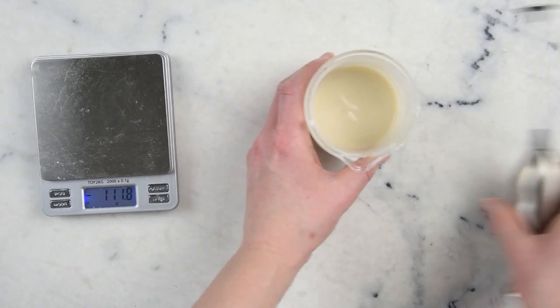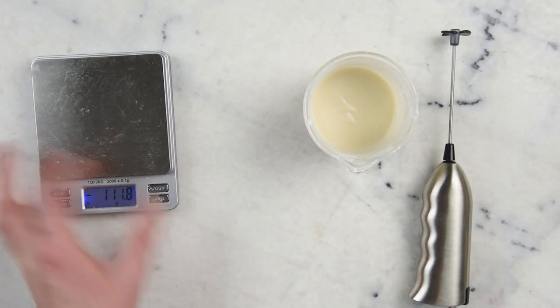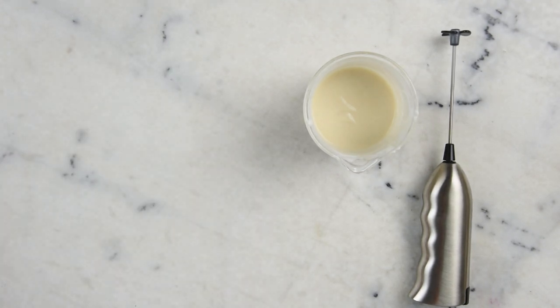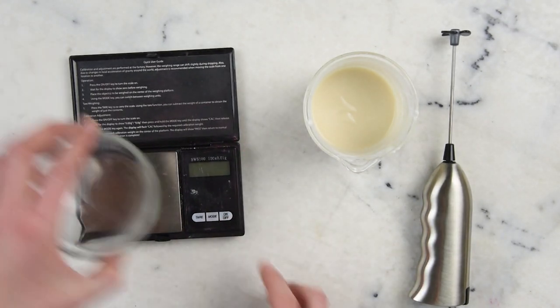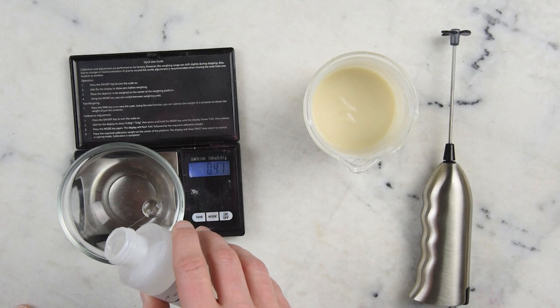Usage rates do vary with preservatives. So make sure you're using the correct usage rate for your preservative. This is my more precise scale. It measures down to 0.01 of a gram instead of just 0.1. So we're going to go for 0.8 grams here.